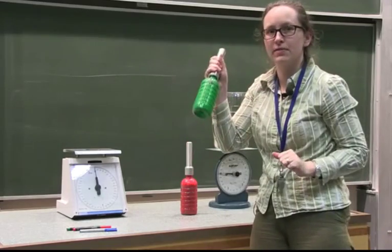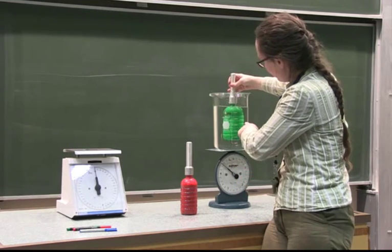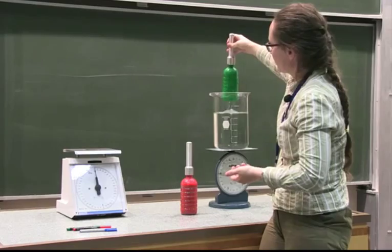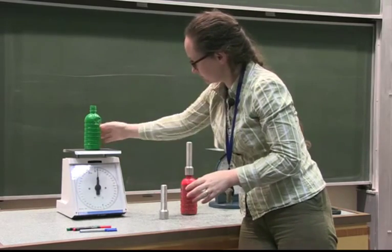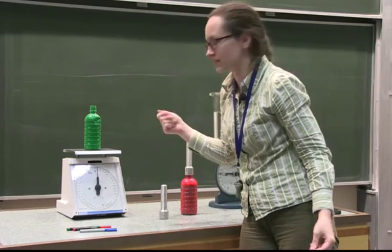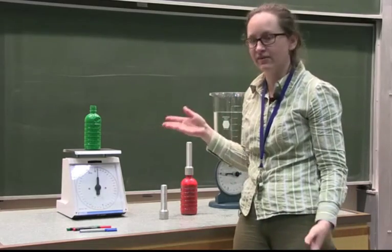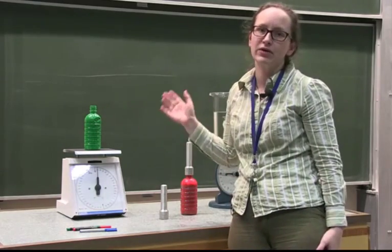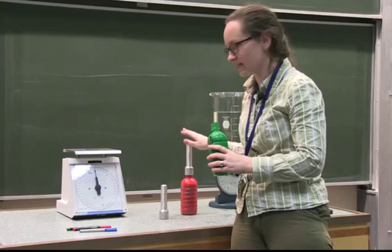Let's check the much lighter green bottle. When we put this one into the water, the volume rises to 3,600 millilitres, so it also has a volume of 600 millilitres. Its mass is 30 grams. So 30 grams divided by 0.6 litres gives us 50 grams per litre, or 0.05 kilograms per litre. This one is much less dense than the red bottle.